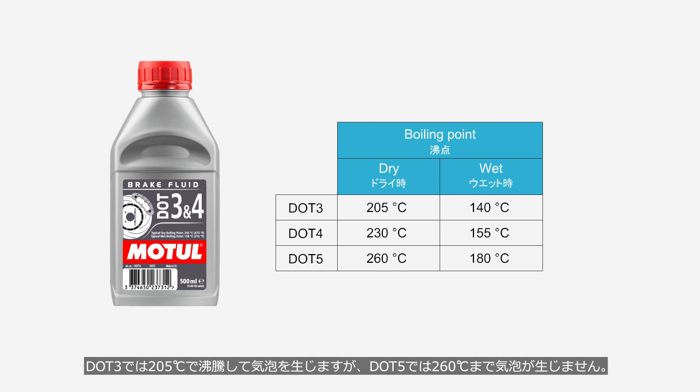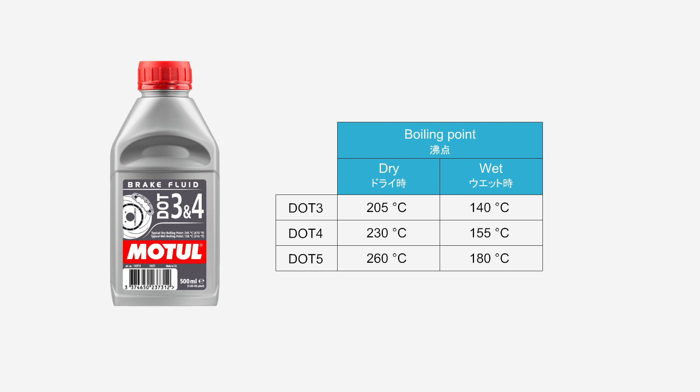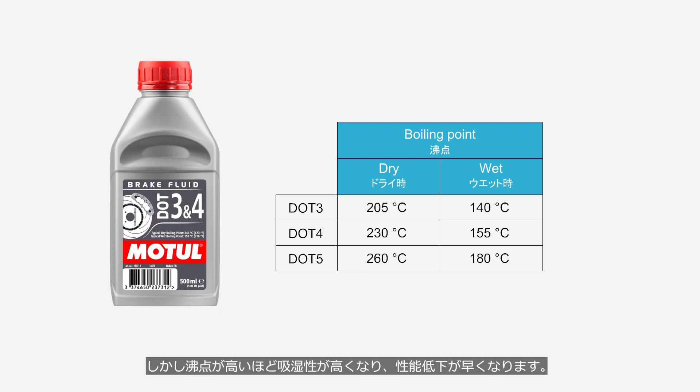DOT 3 fluid boils and forms bubbles at 205 degrees Celsius, while DOT 5 fluid does not form bubbles until 260 degrees Celsius. However, brake fluid with a high boiling point has high hygroscopicity, leading to faster performance degradation. Therefore, high-performance brake fluids require more frequent replacement.